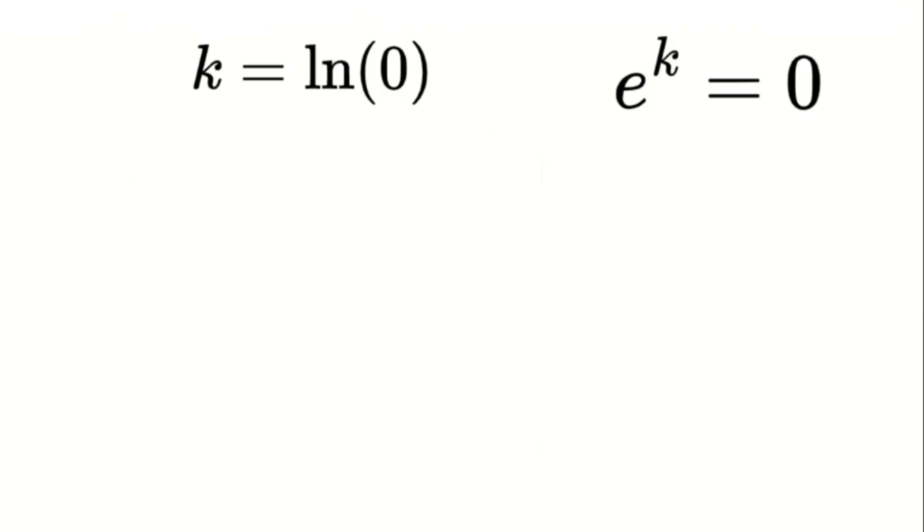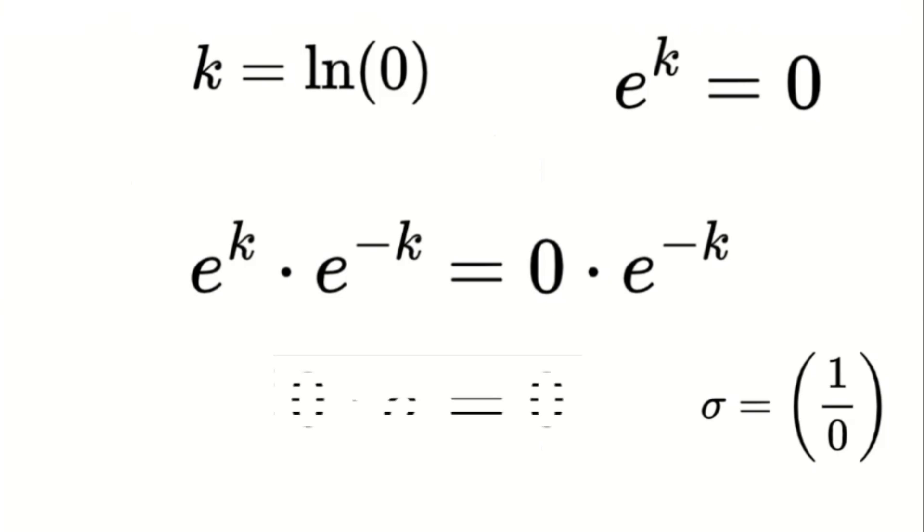Now, let's do a little algebraic manipulation. If we multiply both sides of this equation by e to the power of negative k, we get e to the power of k times e to the power of negative k equals 0 times e to the power of negative k. Recall that we previously defined sigma equals 1 divided by 0. In our system, we are equating e to the power of negative k with this singularity unit sigma. So we can rewrite the right side of our equation: 0 times sigma equals 0. This confirms a crucial identity within our singularity system: 0 times sigma equals 0.